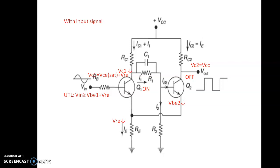At this instant, the collector voltage of Q1 will be equal to VCE(sat) plus VRE, and the collector voltage of transistor Q2 is VCC. We are taking the output at the collector of Q2. Since transistor Q2 is off at this instant, its collector voltage is equal to VCC, and hence we obtain this output conversion.